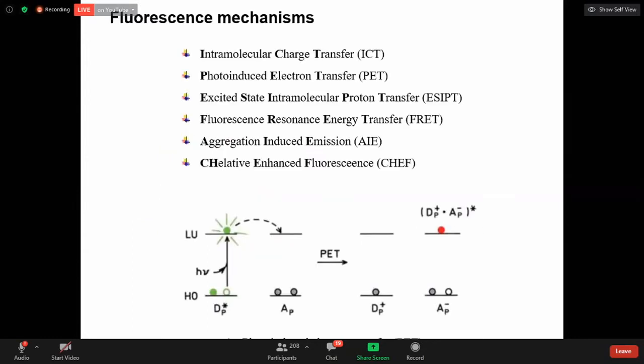And these are all the mechanisms which are involved in fluorescent sensing. First one is intramolecular charge transfer (ICT). Photoinduced electron transfer (PET). Excited state inter as well as intramolecular proton transfer. Fluorescence resonance energy transfer (FRET). Aggregation induced emission (AIE). Chelation enhanced fluorescence (CHEF). Among these I would like to explain two examples.